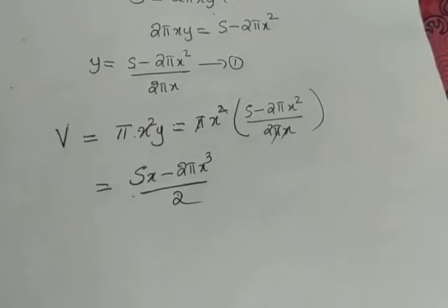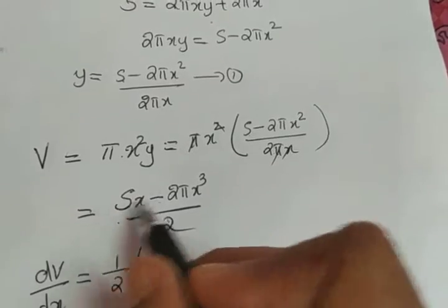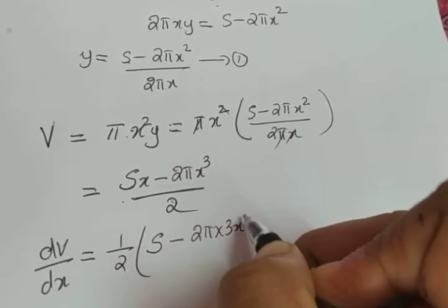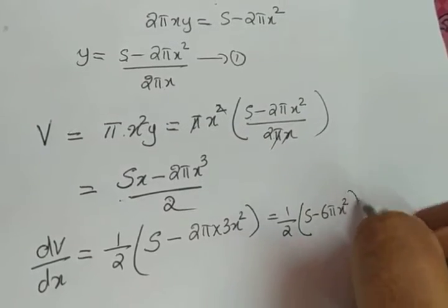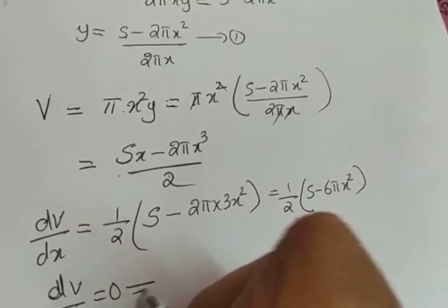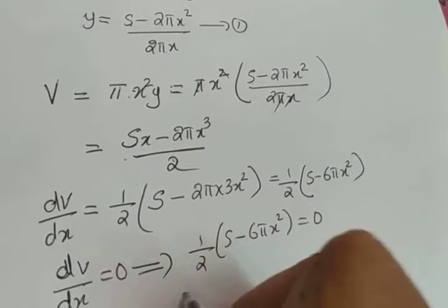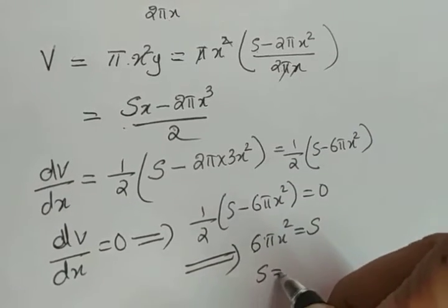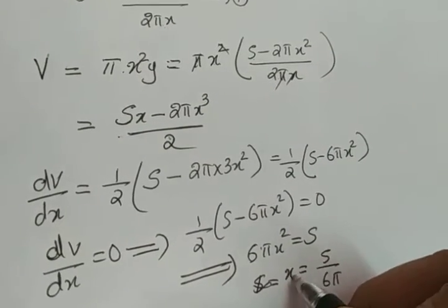Differentiating v with respect to x: dv/dx = (1/2)(s − 6πx²). Setting dv/dx = 0 gives 6πx² = s, so x² = s/(6π).